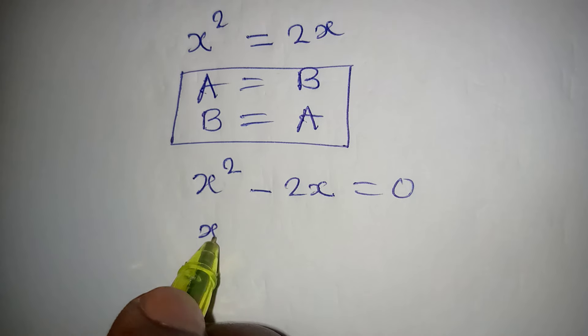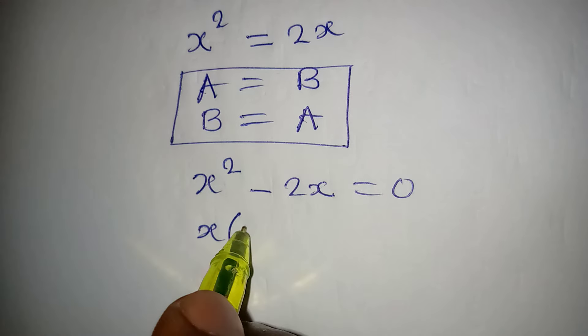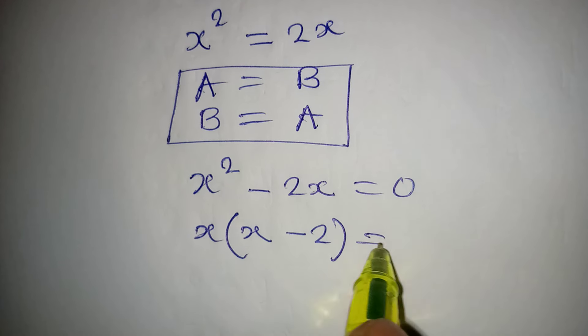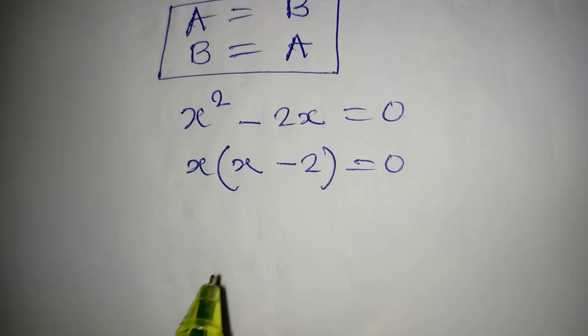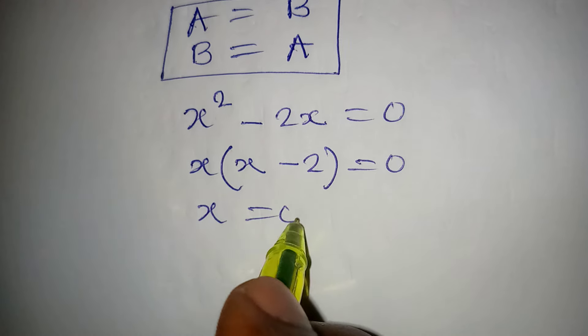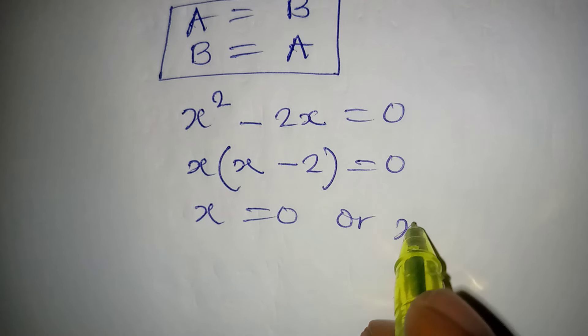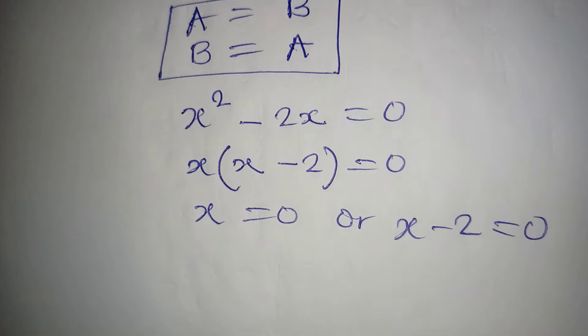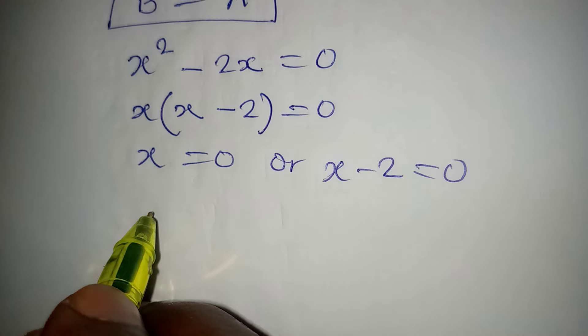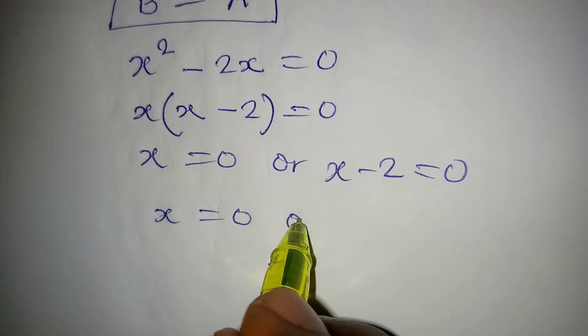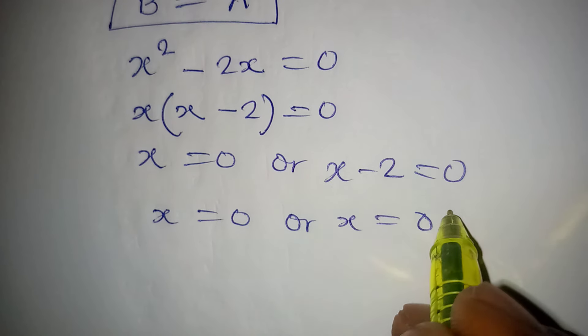Let's factorize: x times x minus 2 equals zero, meaning that x is equal to zero or x minus 2 is equal to zero. So x equals zero or x equals two.